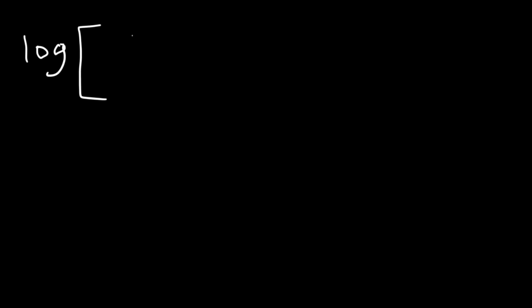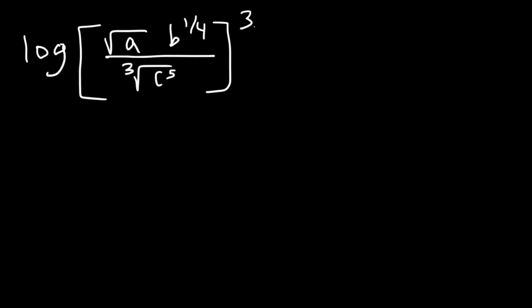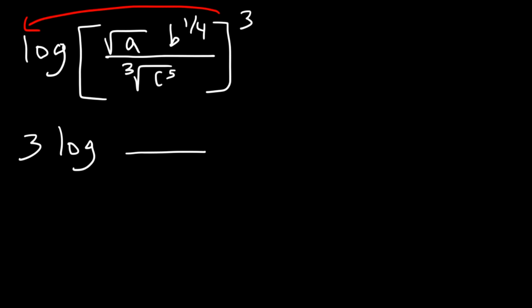Let's try one more example. Go ahead and expand the log — the square root of a times b to the one-fourth divided by the cube root of c to the fifth, all raised to the third power. The first thing I would do is move the 3 to the front, so this is going to be 3 log. Next, we need to get rid of the radicals and write them as exponential fractions. The square root of a is a to the one-half, and then we have b to the one-fourth. The cube root of c to the fifth is c raised to 5 over 3.